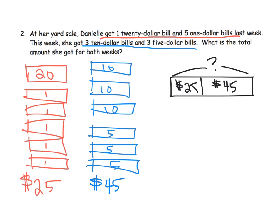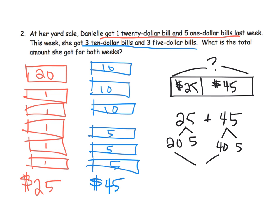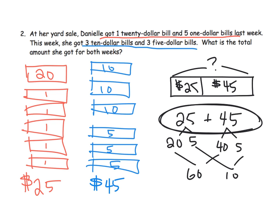This is a perfect opportunity to allow students to do some math in their head. One way is to think of this as twenty and five, and forty and five — twenty plus forty is sixty, five and five is ten, and sixty plus ten is seventy. Another idea would be to leave the twenty-five alone and decompose the forty-five, moving five over to get thirty plus forty. There are a variety of ways to let students talk about how they added the money.